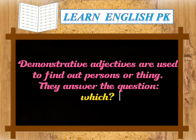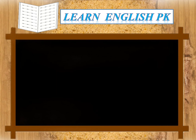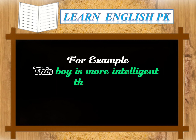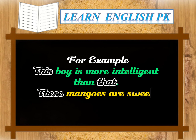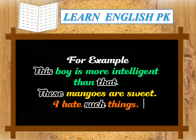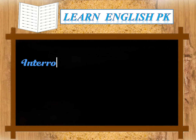Demonstrative adjectives are used to point out persons or things. They answer the question 'which?' For example: This boy is more intelligent than that. These mangoes are sweet. I hate such things.